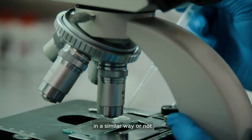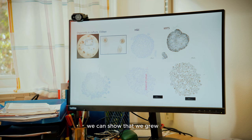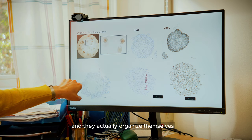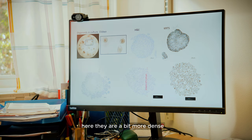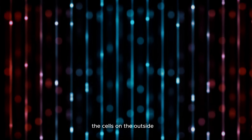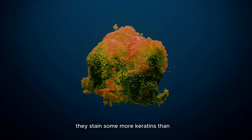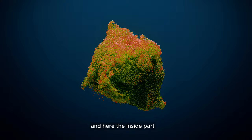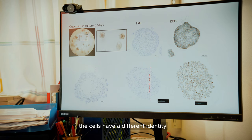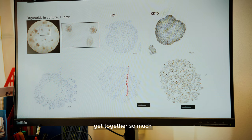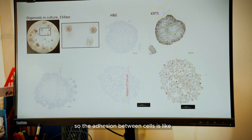If they are behaving in a similar way or not. We can show that we grow organoids in different conditions and from different origins, and they actually organize themselves slightly differently. For example, here they are a bit more dense but still very organized. The cells on the outside stain some more keratins than the cells in the inside. Here the inside part looks like the cells have a different identity. The cells do not get together so much, so the adhesion between cells is slightly different.